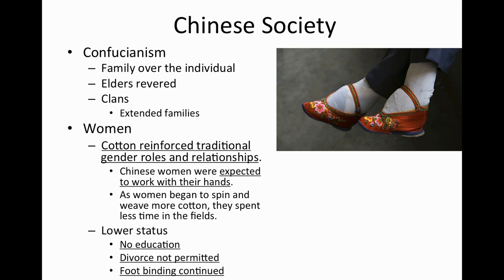In Chinese society, Confucianism continued to dominate — revering elders, emphasizing family over the individual, and extended families living together. For women, not much changed. Cotton became a new agricultural product that reinforced traditional gender roles. Women were expected to spin and weave cotton, spending less time in the fields and more time in silk workshops or spinning cotton. They continued to have very low status: no education, no divorce, and foot binding remained a common practice.